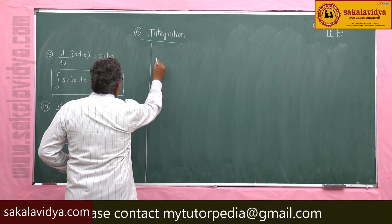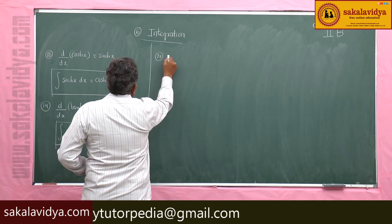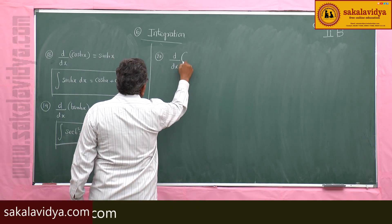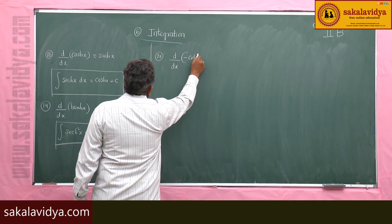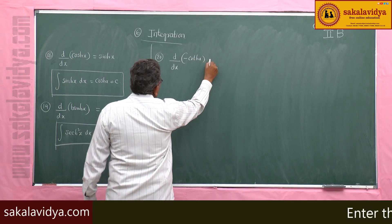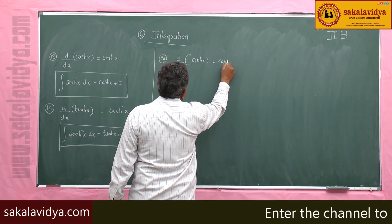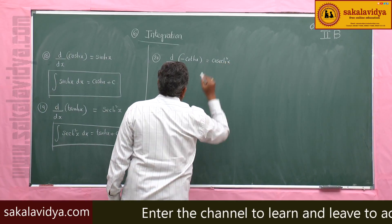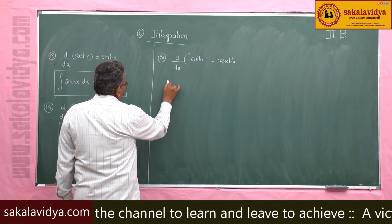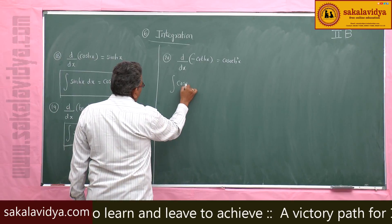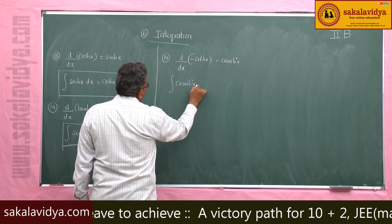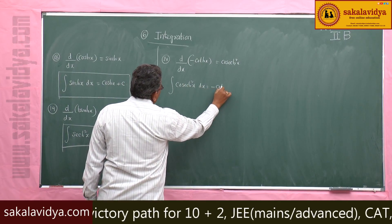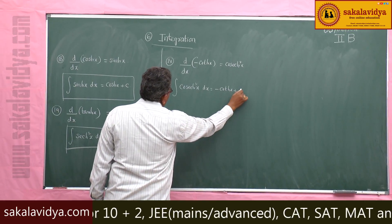Next, d by dx of minus coth x is cosech squared x. So, integral of cosech squared x dx is equal to minus coth x plus c.